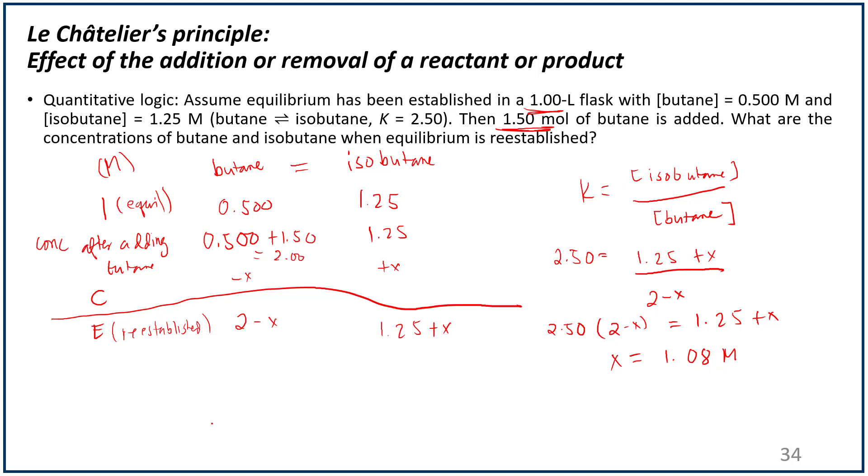That is how much has changed, so therefore, the new equilibrium concentration of isobutane should be equal to 2 minus 1.08 molar. So that should be 0.93 molar. And then the new concentration of butane should be equal to 1.25 plus 1.08 molar, which is equal to 2.32 molar.